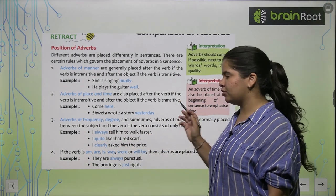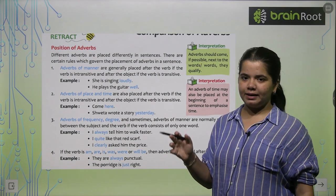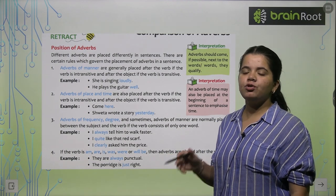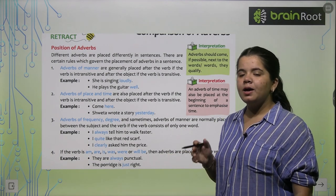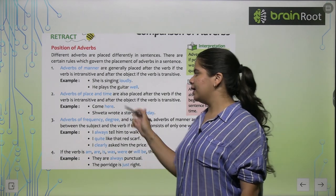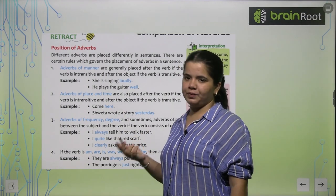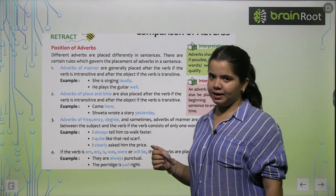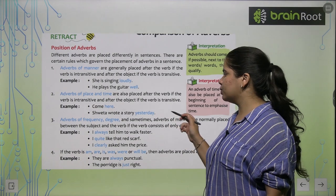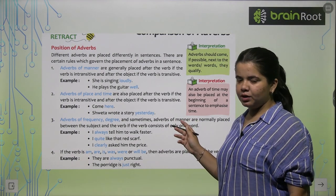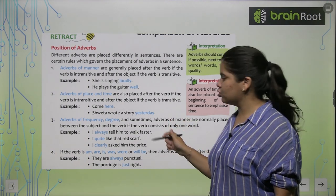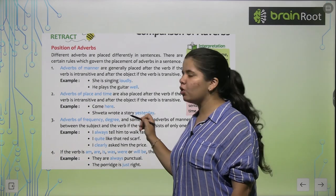'He plays the guitar well' — intransitive verb. If your verb is transitive, then you can add an object. Two examples: 'Come here' — intransitive. 'Shweta wrote a story' — this is our transitive sentence, and 'story' is our object.